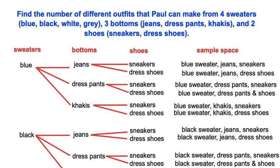So this is the exact same question, just organized in a tree diagram. As you can tell, there are many different options that he can create just by using the blue sweater. If you look in the sample space, he has six outfit choices.